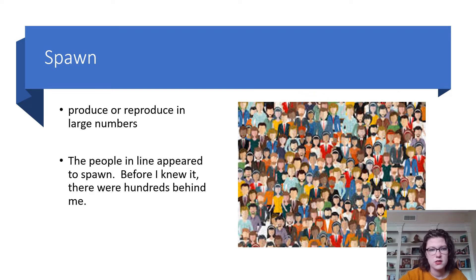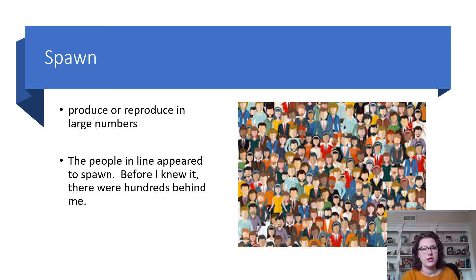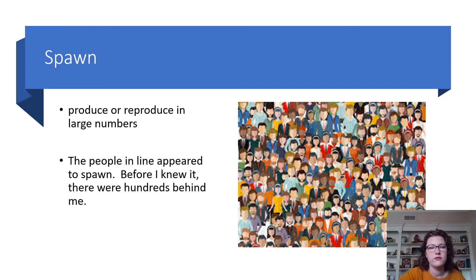Spawn. To spawn means to produce or reproduce in large numbers. Example: The people in line appeared to spawn — before I knew it, there were hundreds behind me. We often talk about this in terms of animal reproduction, but it can also be used more figuratively like in that sentence.